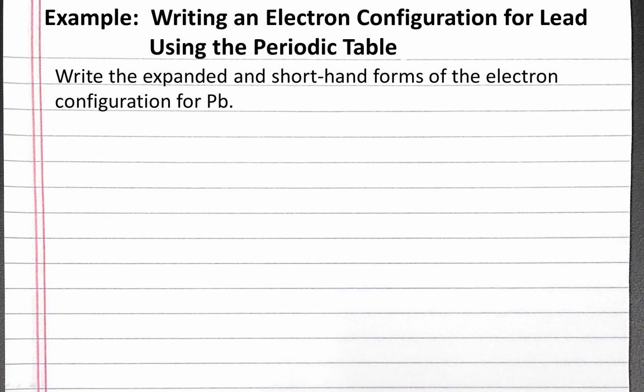In this example problem, we write an electron configuration for lead using the periodic table. The problem reads: write the expanded and shorthand forms of the electron configuration for lead.